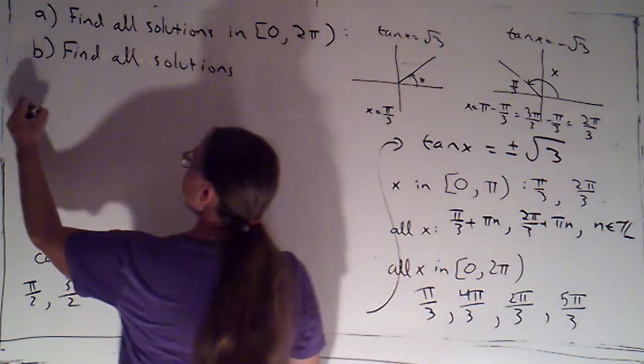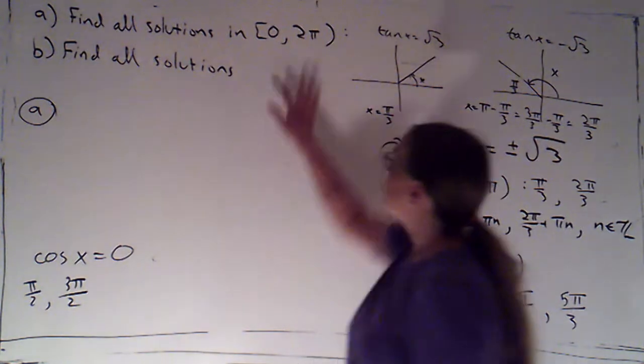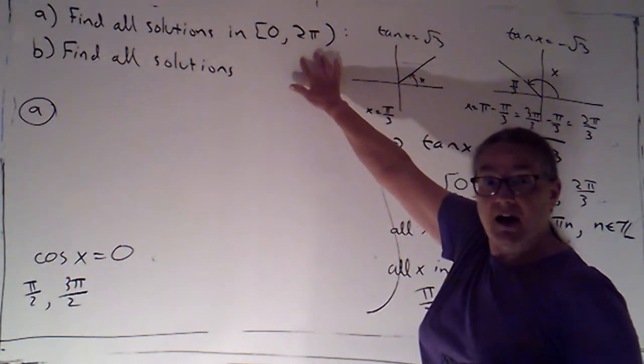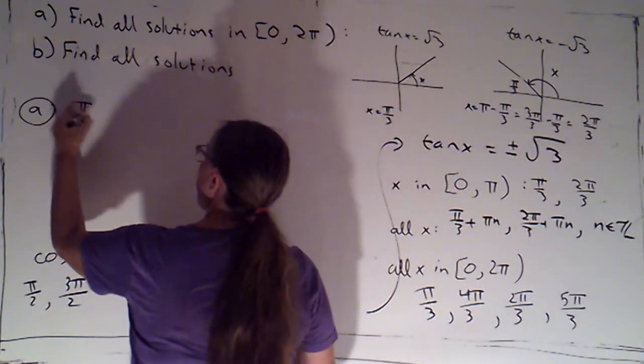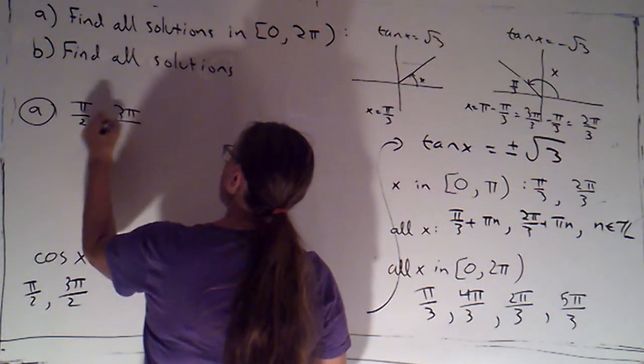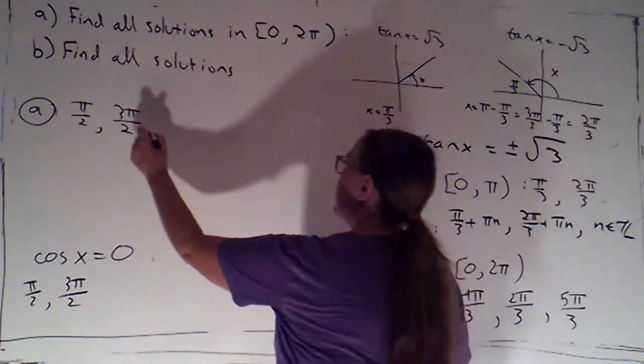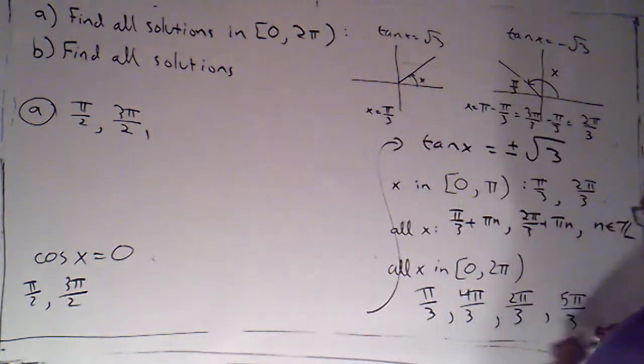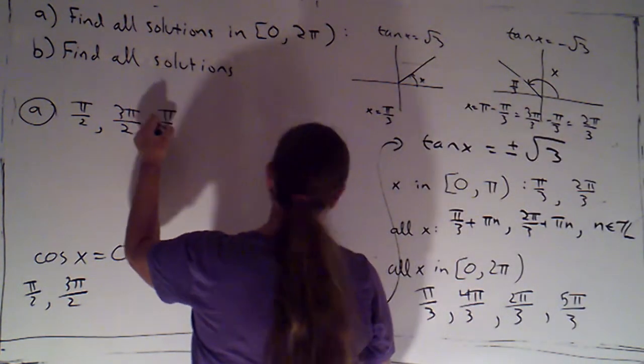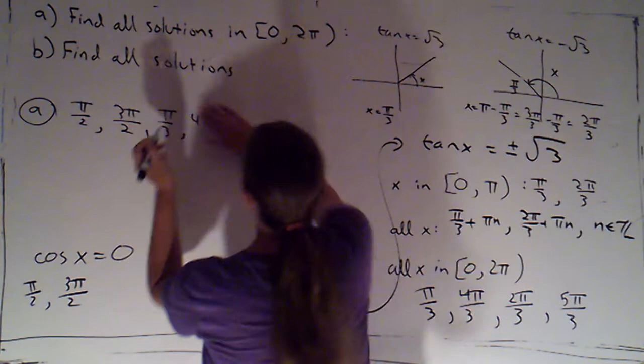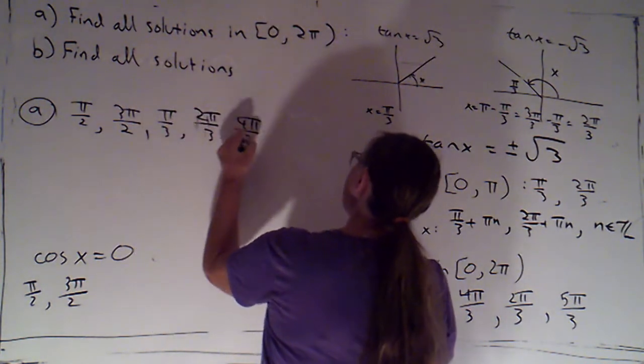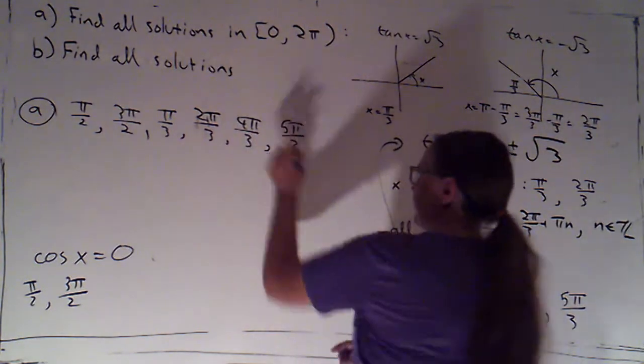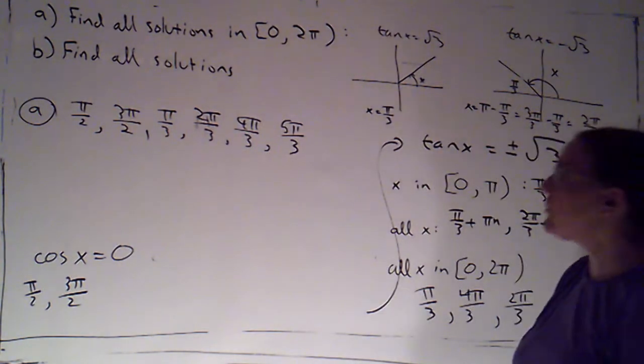So, now I'm able to say, for part A, the solutions from 0 to 2 pi, that's going to include the solutions for where cosine was 0. So, that's pi over 2 and 3 pi over 2. And then the solutions for where tangent was plus or minus root 3. And that's pi over 3, or I'll list them in order. 2 pi over 3, 4 pi over 3, and 5 pi over 3.